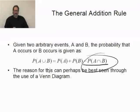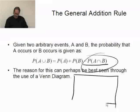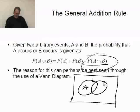The reason we have to subtract off that joint probability can best be shown with a quick Venn diagram. If this is event A and this is event B, well, if A is all of this and B is all of this,